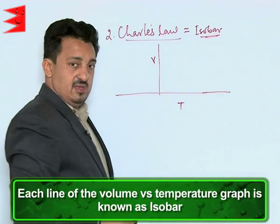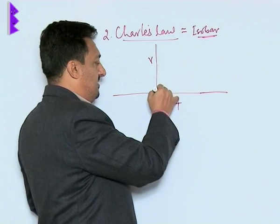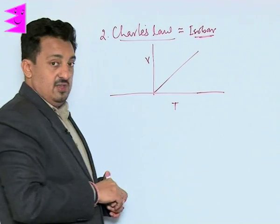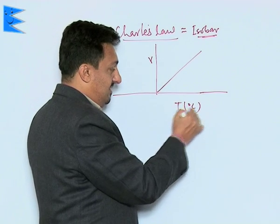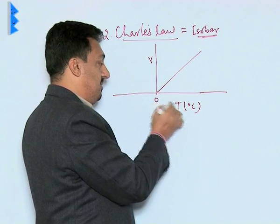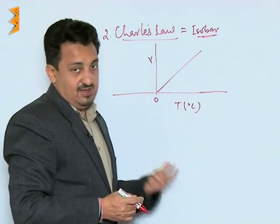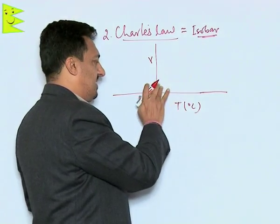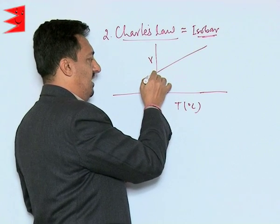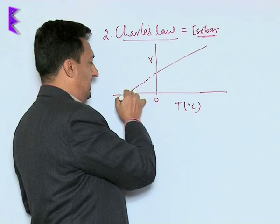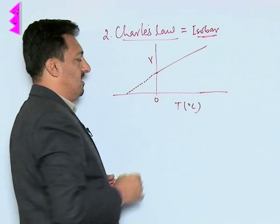If we plot a graph between volume and temperature, as the law says volume and temperature are directly proportional, the line should pass through the origin. But it's not like this. When temperature becomes zero degree Celsius, the volume doesn't become zero. What actually happens is the graph comes out like this.